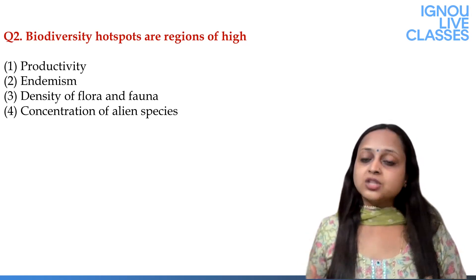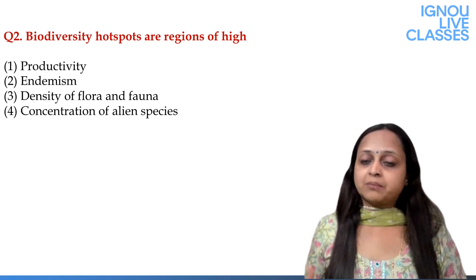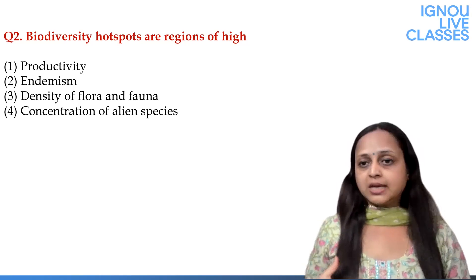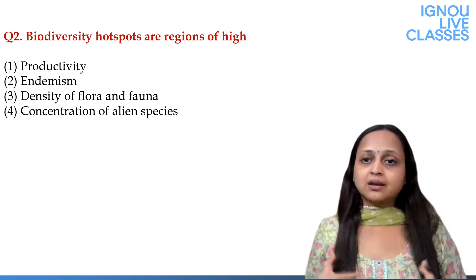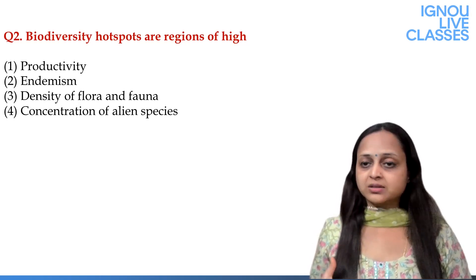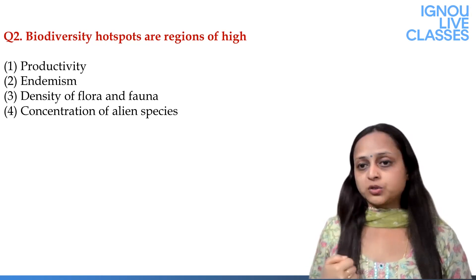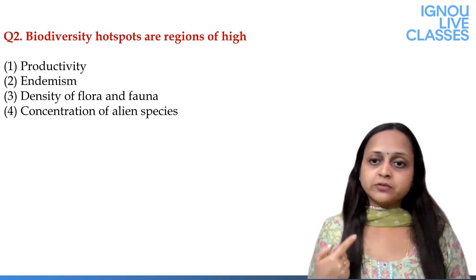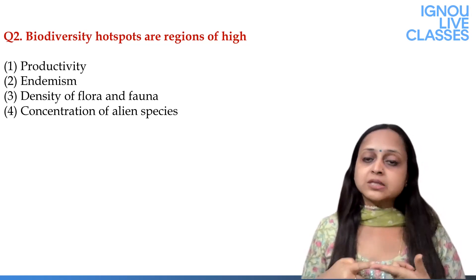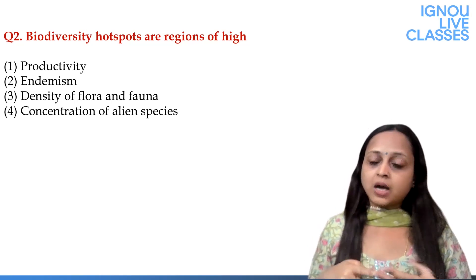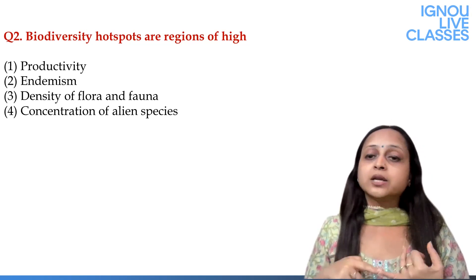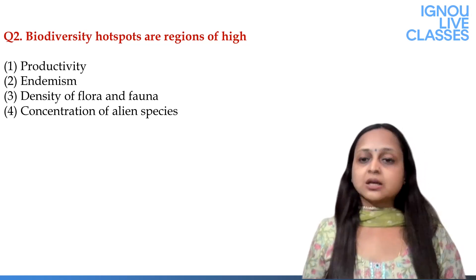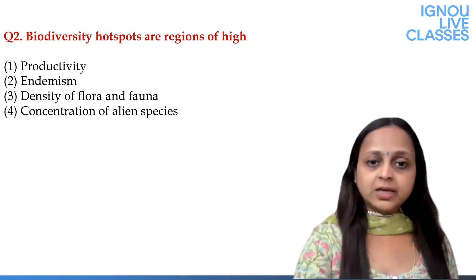So biodiversity hotspots are the regions of high endemism, meaning the species are endemic — they are found there and nowhere else in the world. There are 36 hotspots of biodiversity globally. In India, there are four hotspots: first is the Indo-Burma region, second is the Western Ghats, third is the Himalayas, and the newly added hotspot is Sundaland. These are the four biodiversity hotspots of India.